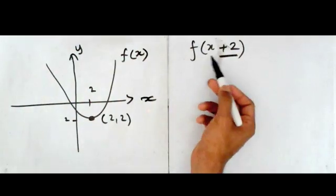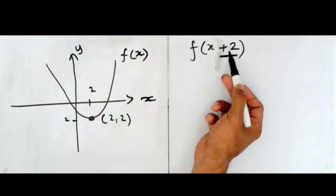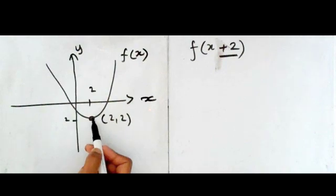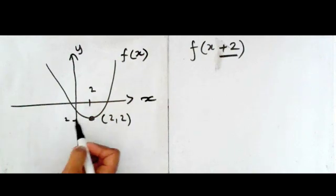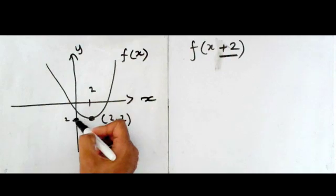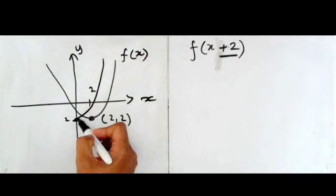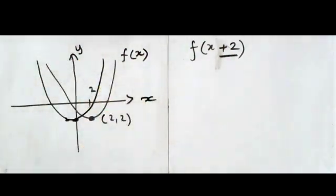So in this case, plus 2 means that I'm going to shift along my graph along the x-axis by minus 2. So I'm only going to move it along the x-axis, so from here it's going to go over up to here. So I'll draw my point there, and I can draw my graph just like that.